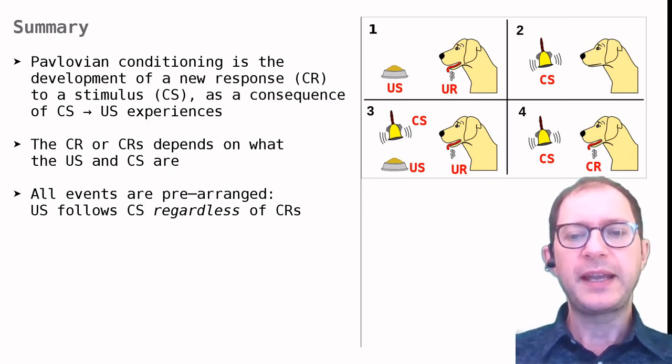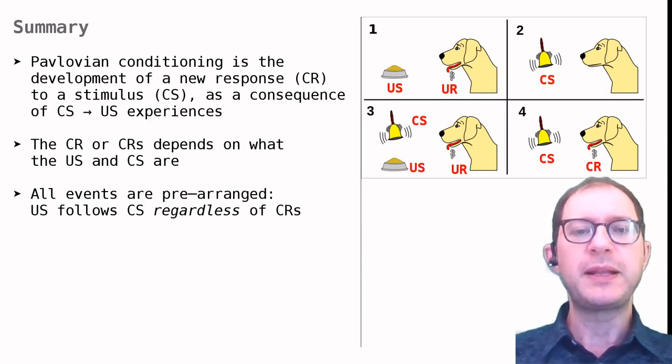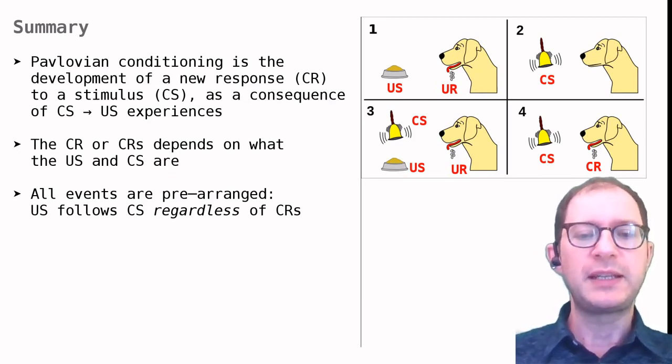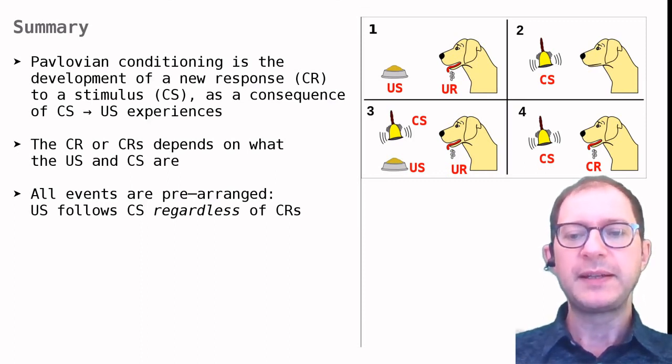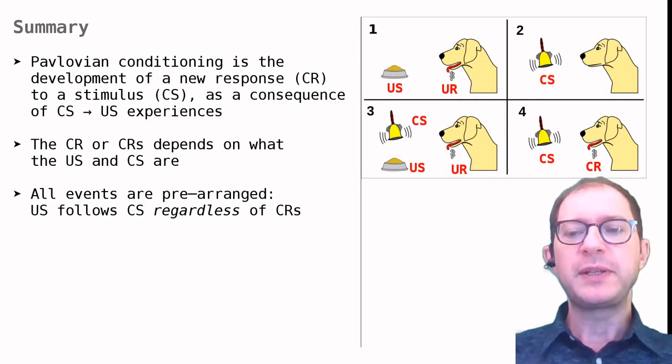The second thing I'd like to add is that we should always keep in mind that the CS is followed by the US, regardless of what the animal does. For example, Pavlov always offered meat to his dogs, regardless of whether the dog had salivated to the CS or not. Salivation appeared spontaneously, without being required, and this is true of any Pavlovian conditioned response. It requires some effort to understand the meaning of this fact, which we will revisit in a future lesson.